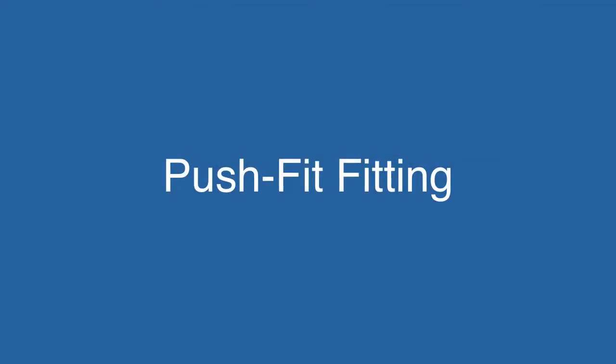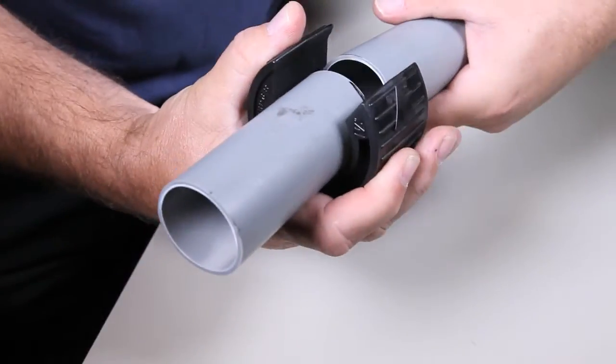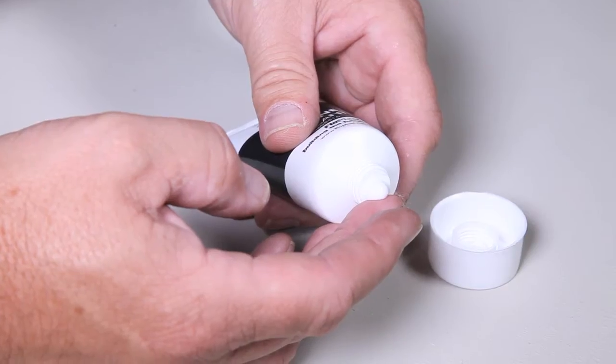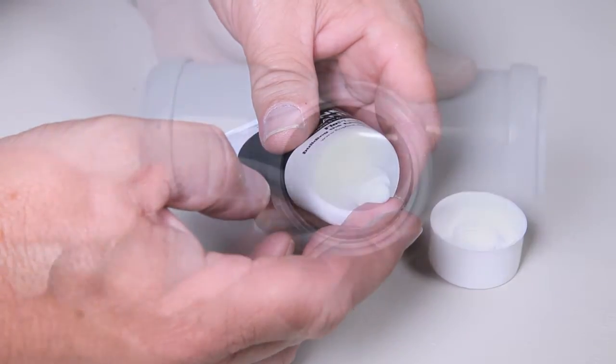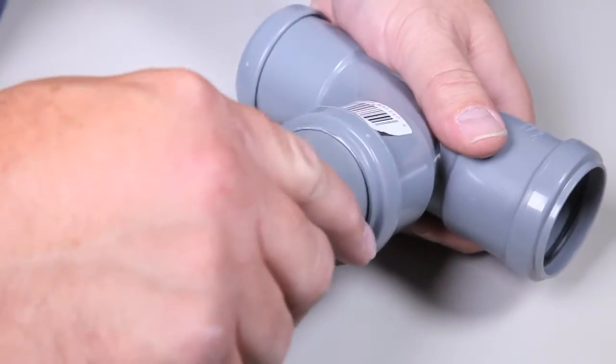The push fit fitting: Measure and cut the pipe to size. Lubricate the ring seal in the socket, then push the pipe into the socket.